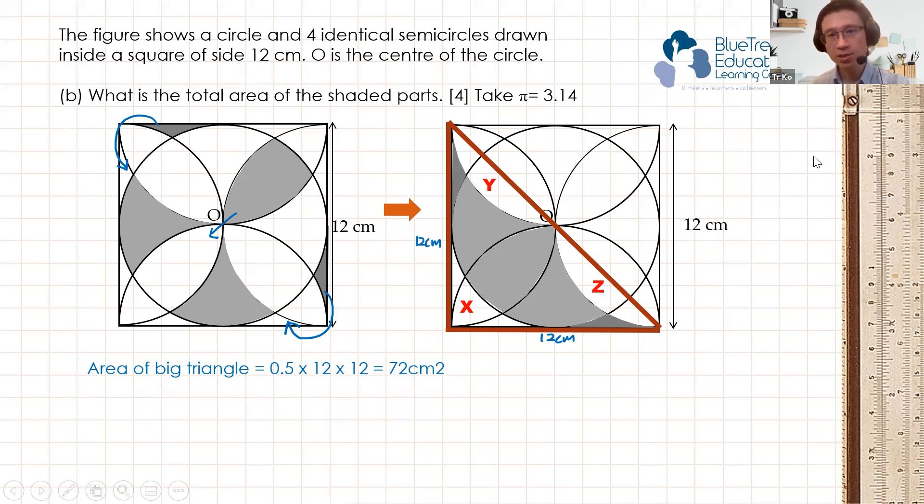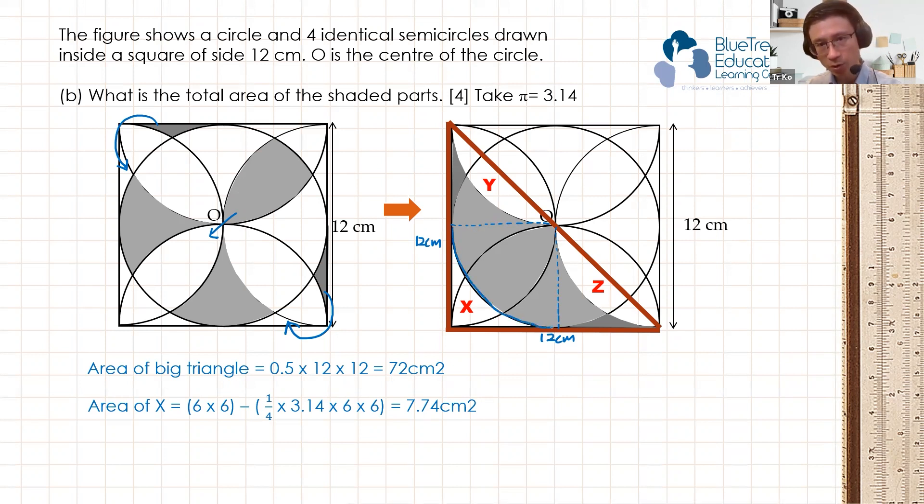Next, let's find the area of X. Now area of X is the same as the area of the square, take away the area of a quadrant. So the area of the square looks like that. This is the area of the square.